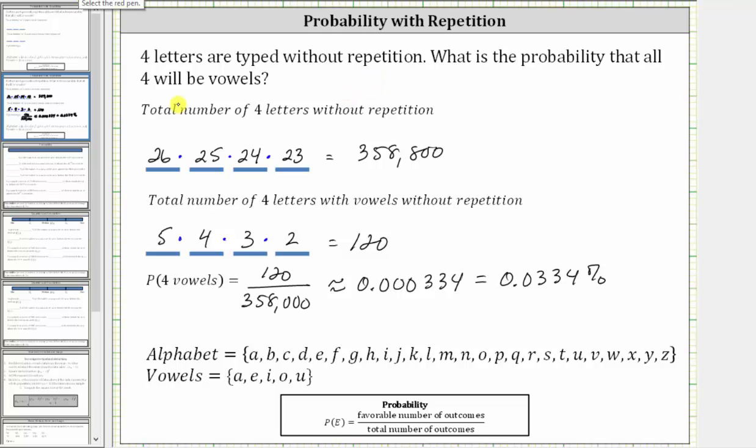The probability of typing a vowel for the first letter is 5/26. Given the first letter is a vowel, the probability that the second letter will be a vowel is 4/25, because there's one less letter and one less vowel.